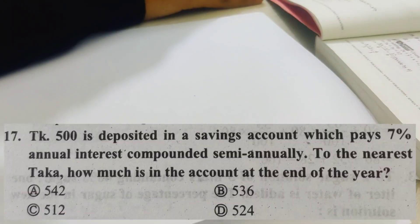The question is: Taka 500 is deposited in a savings account which pays 7% annual interest compounded semi-annually. To the nearest taka, how much is in the account at the end of the year?